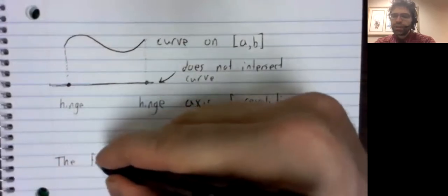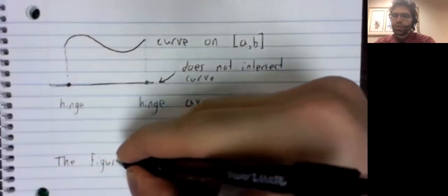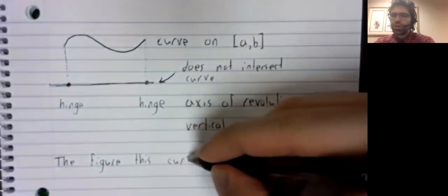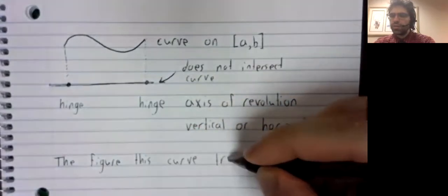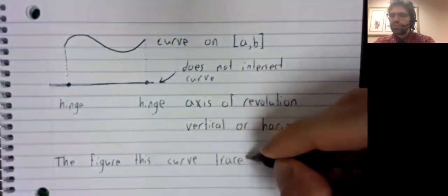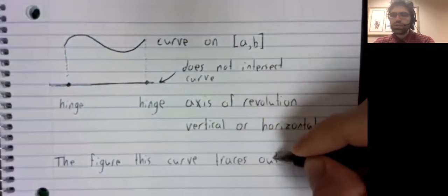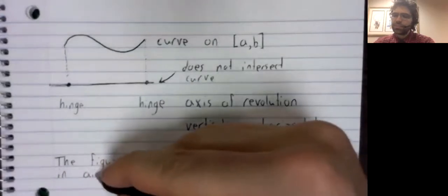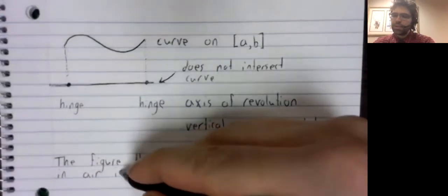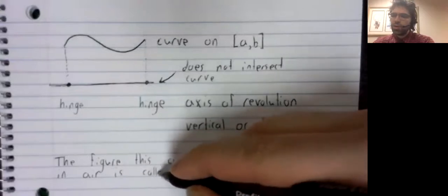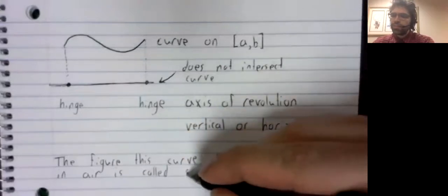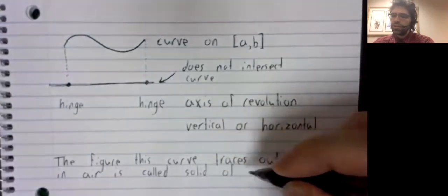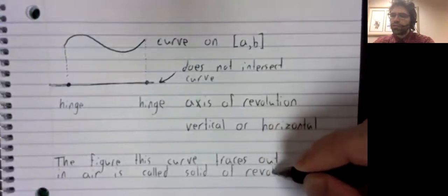The figure that this curve traces out in the air is called a solid of revolution.